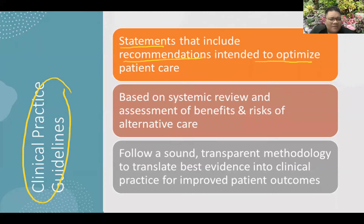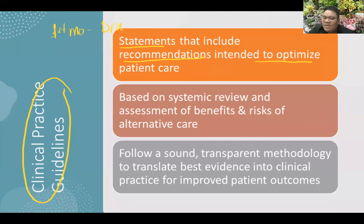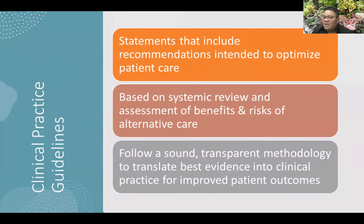There was a drug — let's call it Drug A — that was initially experimented for COVID-19, but it was found to have a cardiotoxic effect. On the first month of COVID-19, Drug A was recommended for use. However, by the third month, it was found to cause cardiotoxic effects and was removed from the recommendations. Clinical practice guidelines are based on systematic review.